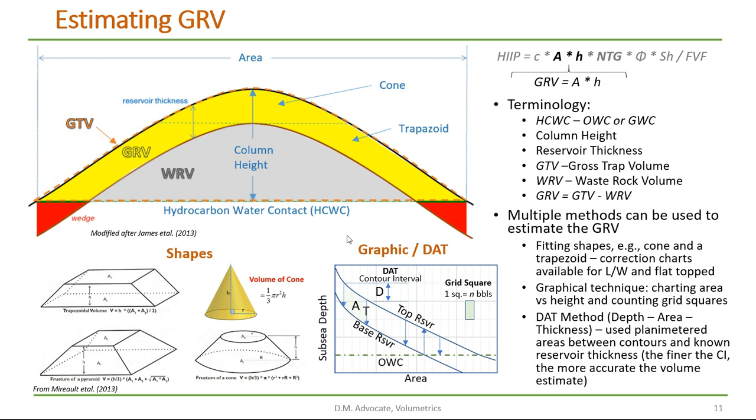In most cases, one shape would not fit the entire trap. So we may use a cone for the top portion of the trap and trapezoids for the flanks. There are a number of published shapes with formulas for calculating areas that can be used in this method.